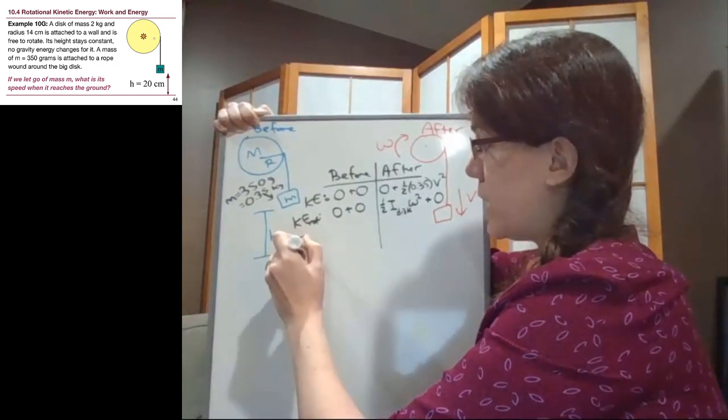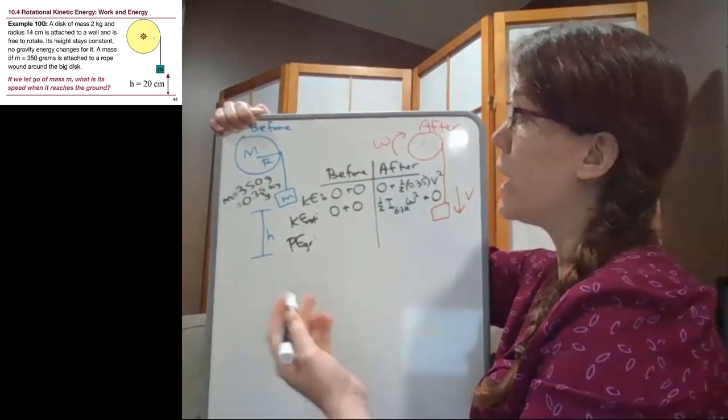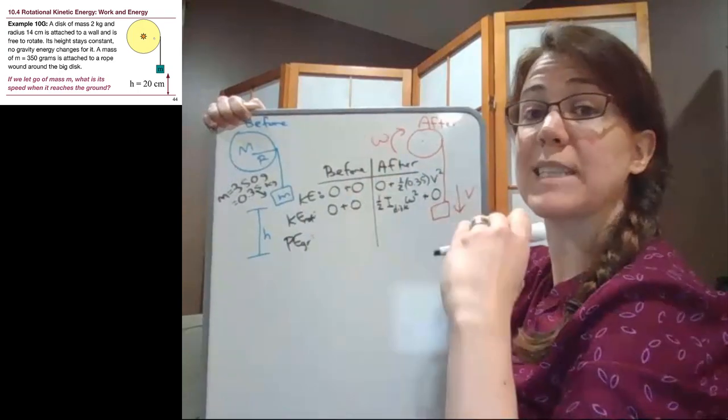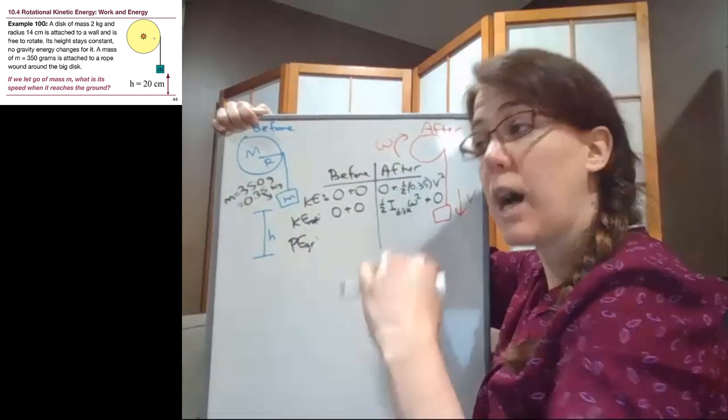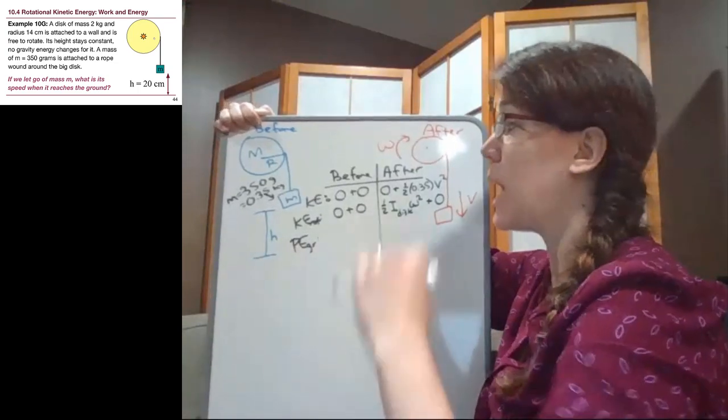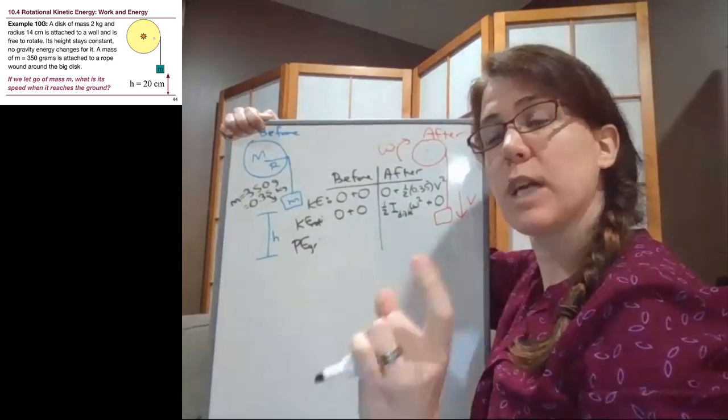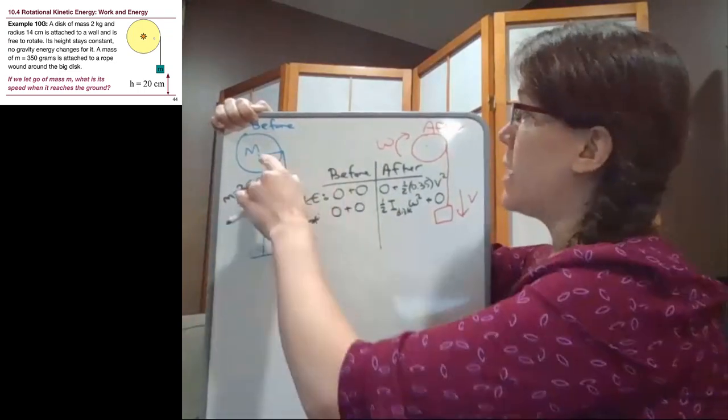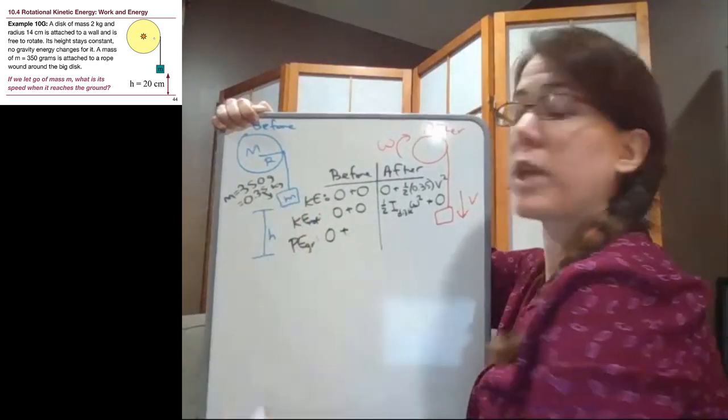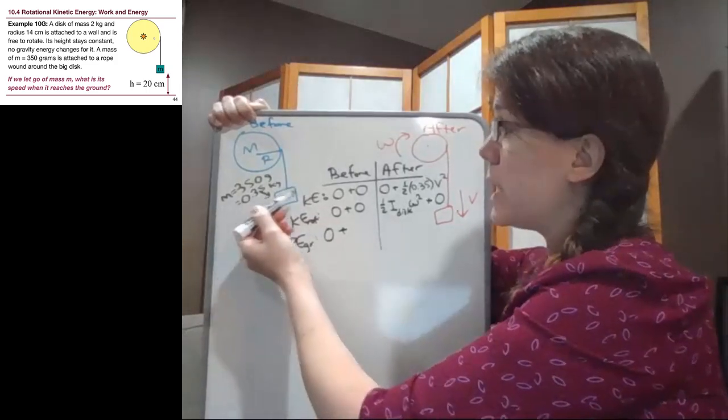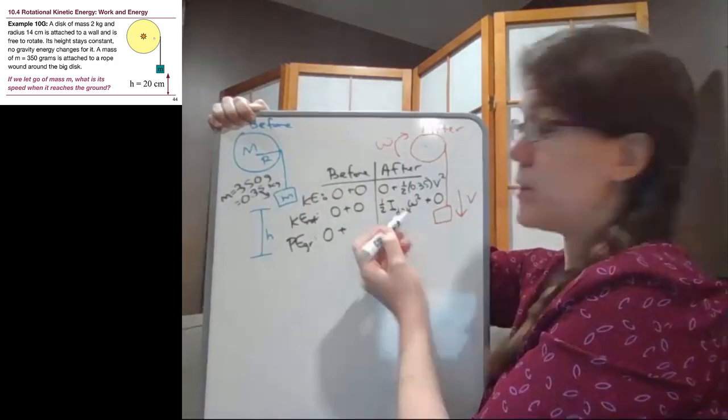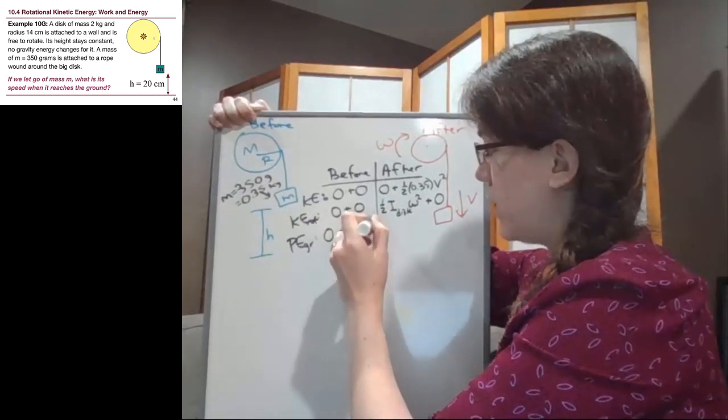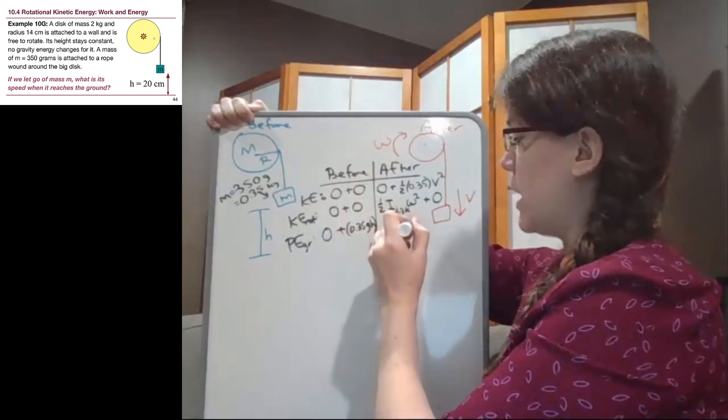Then we ask ourselves about gravity. Are we higher at the start of the problem? If we look at the disk, it stays at exactly the same height in both cases, which means it is not higher at the beginning of the problem or at the end. Because that full question is, are we higher than we are at other points in the problem? The disk doesn't fit the bill there. For the little mass though, it is higher at the beginning of the problem than it is at the end. So it is absolutely higher at this point in the problem, 0.35gh, than it is at the end.